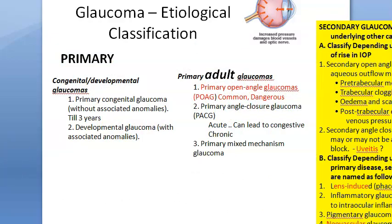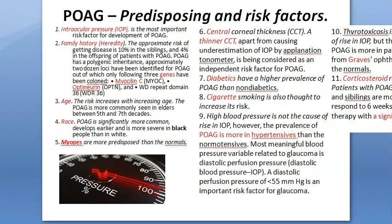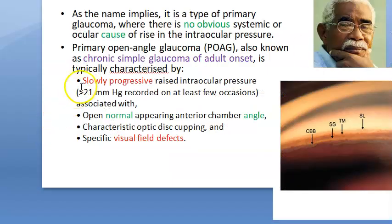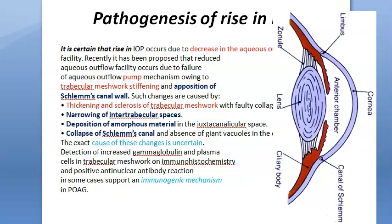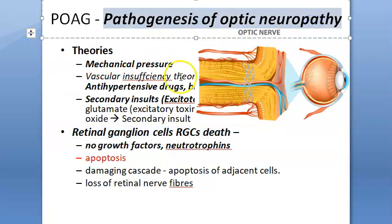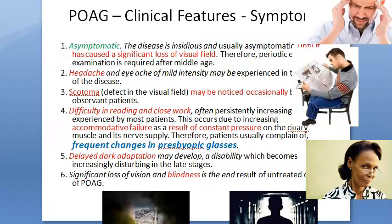POAG is slow and progressive; IOP greater than 21 mmHg. Pathogenesis: trabecular meshwork stiffening, sclerosis, narrowing of intratrabecular spaces, deposition of amorphous material, and collapse of Schlemm's canal. This leads to optic nerve damage via mechanical pressure, vascular insufficiency, and retinal ganglion cell apoptosis. Clinical features: asymptomatic initially, or headaches, scotomas, difficulty with close work, frequent presbyopic glass changes, delayed dark adaptation, and eventual blindness.